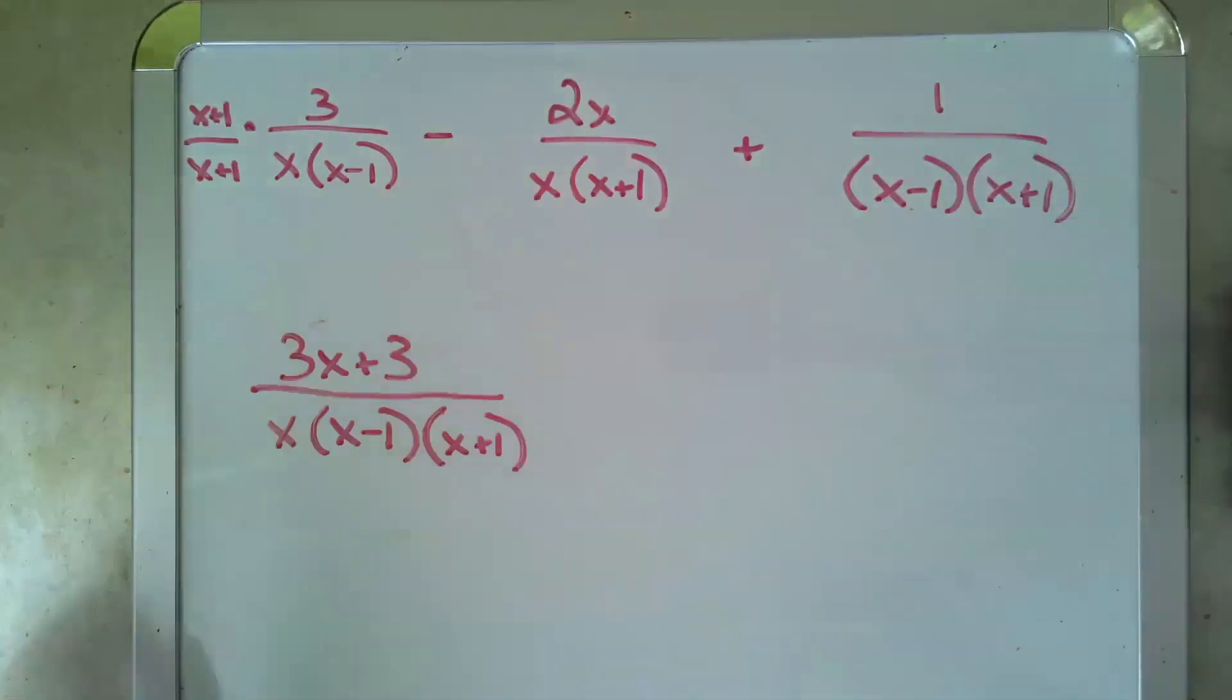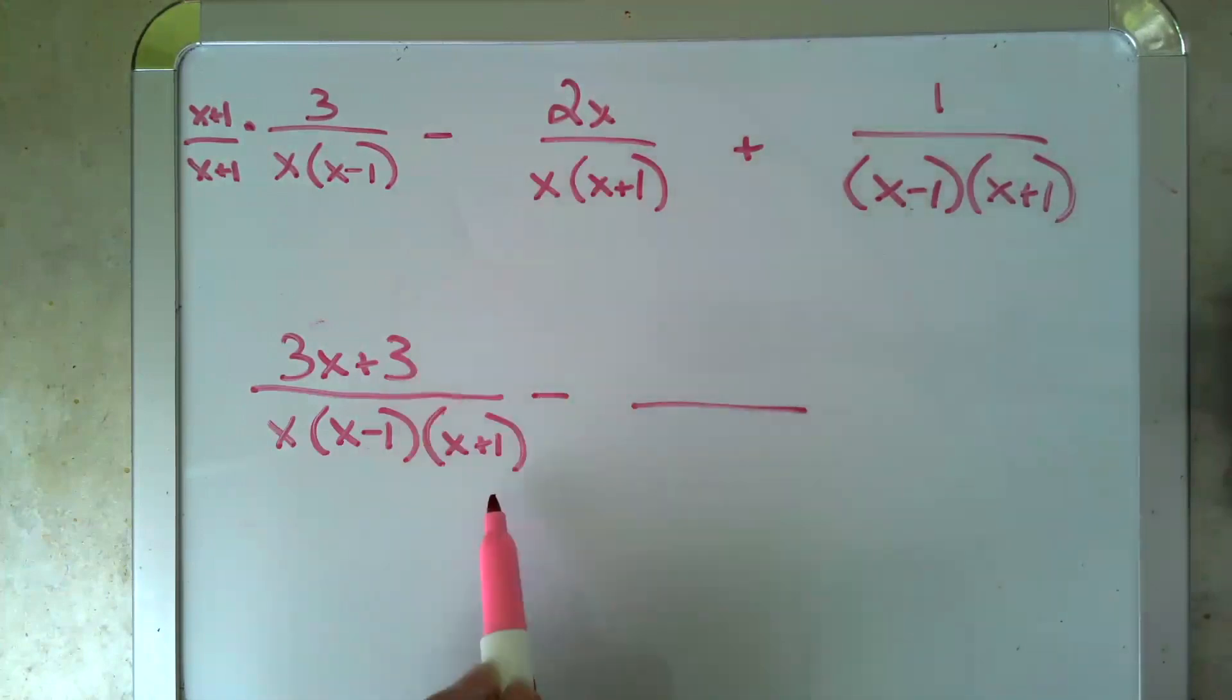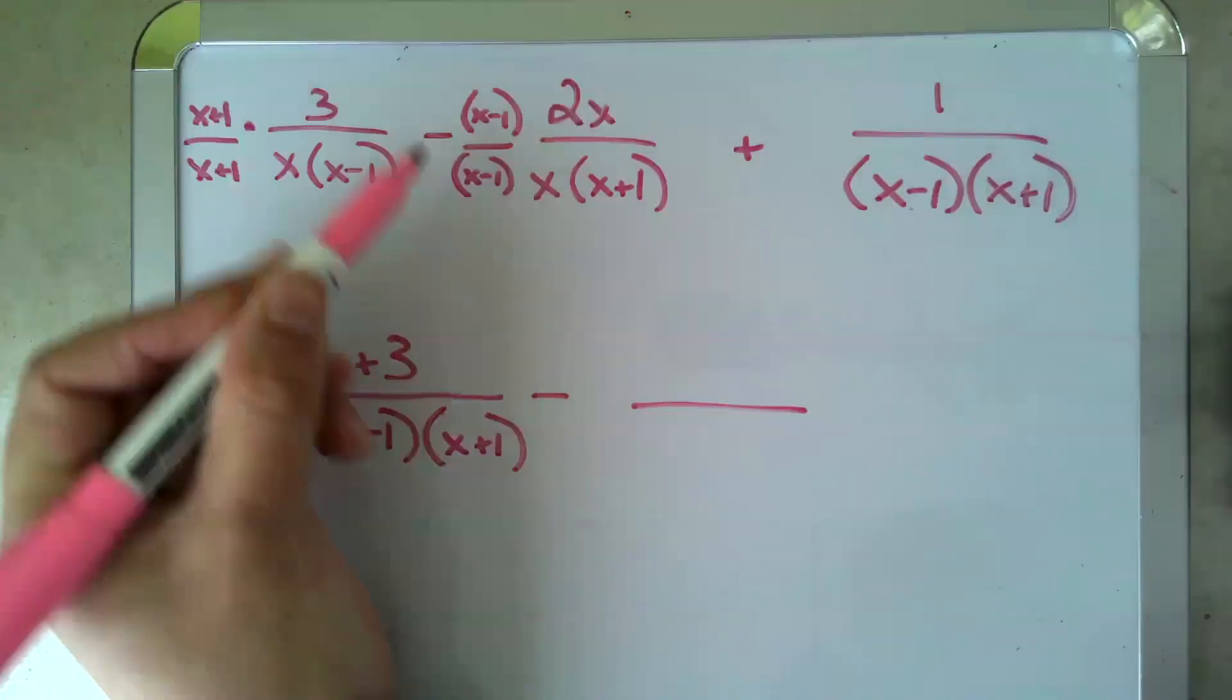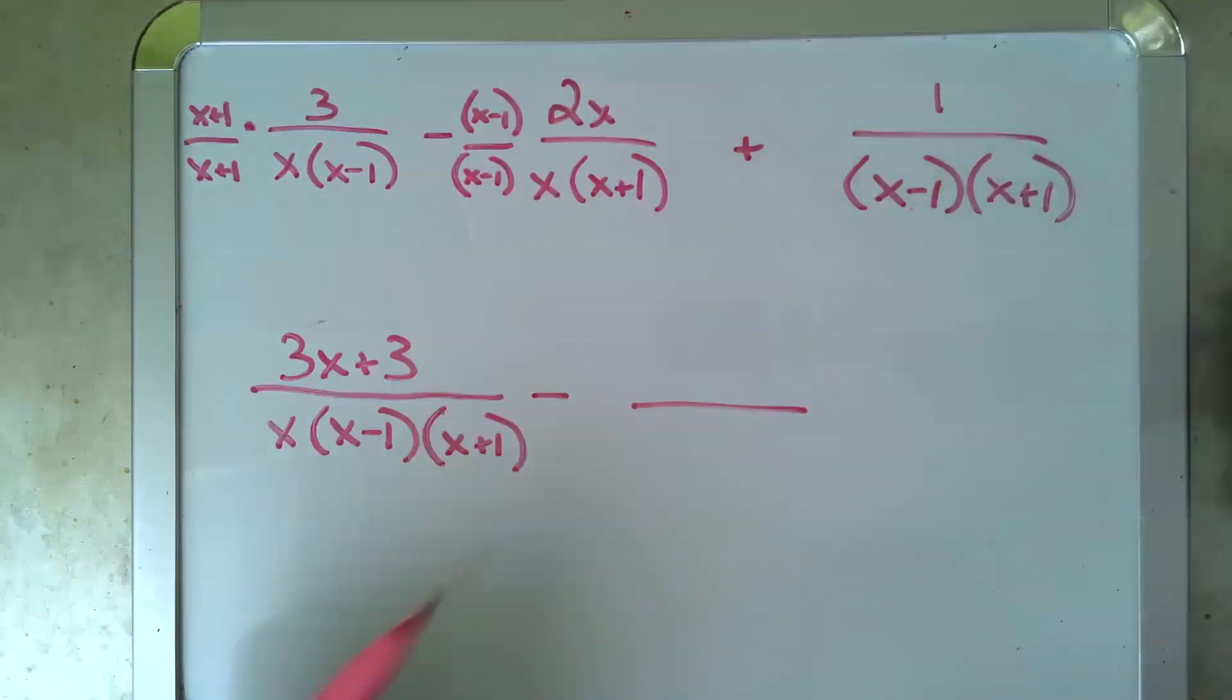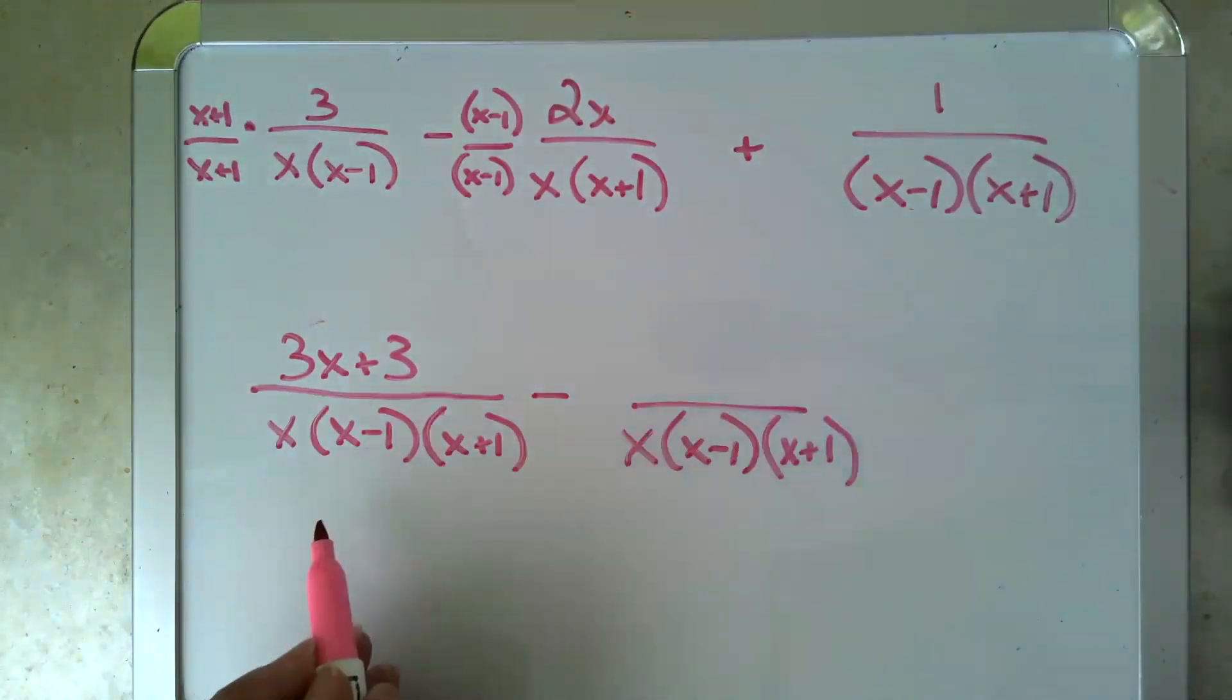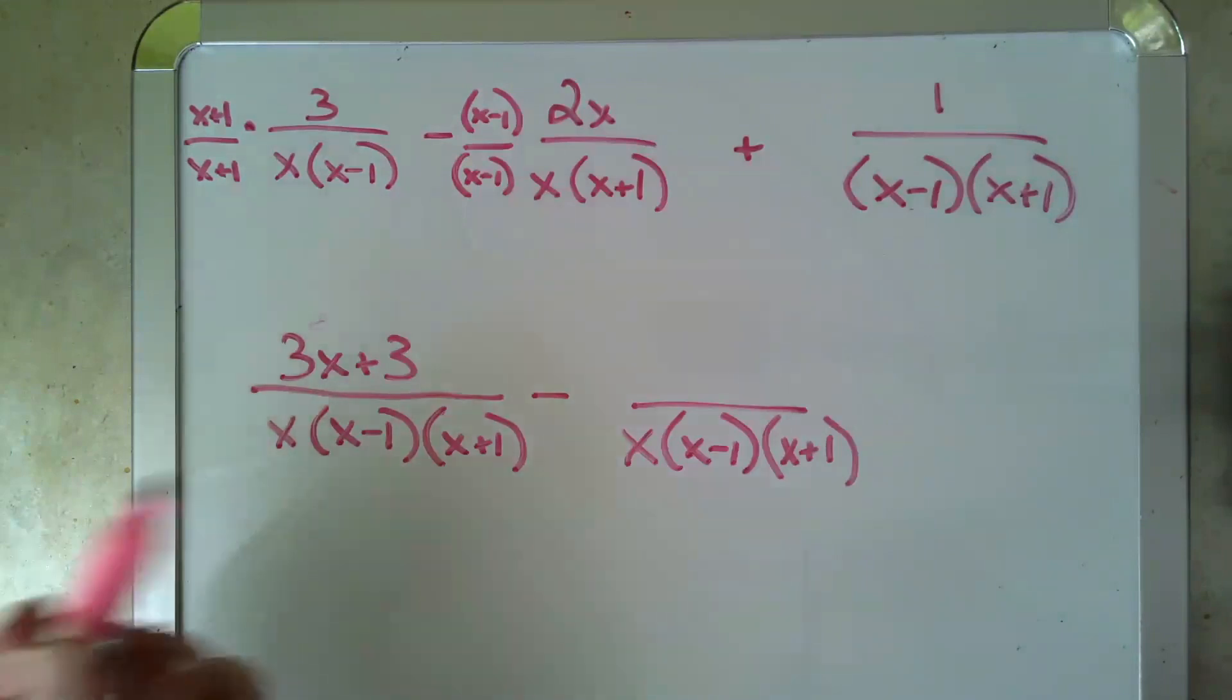Now I'll do the same thing over here. Well, I see my x and my x plus 1, so I need to multiply an x minus 1 top and bottom. Again, just multiplying by 1 doesn't change the fraction, just changes the form. Denominators the same because that was the goal, right? All three having the same denominator means I can combine their numerators. Now I distribute this through and my new numerator is,